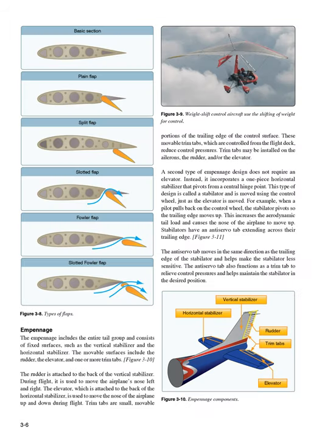Empennage. The empennage includes the entire tail group and consists of fixed surfaces such as the vertical stabilizer and the horizontal stabilizer. The movable surfaces include the rudder, the elevator, and one or more trim tabs. The rudder is attached to the back of the vertical stabilizer. During flight, it is used to move the airplane's nose left and right.